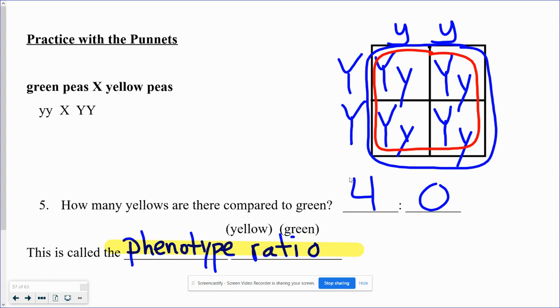So that gives us a 4:0 ratio. A little trick is that these two numbers should always add up to four. So that's phenotype ratio for this particular cross. Other ones might be 2:2 or it might be 3:1.